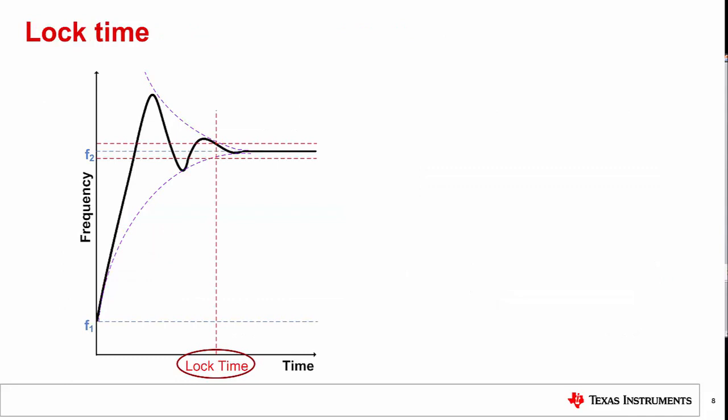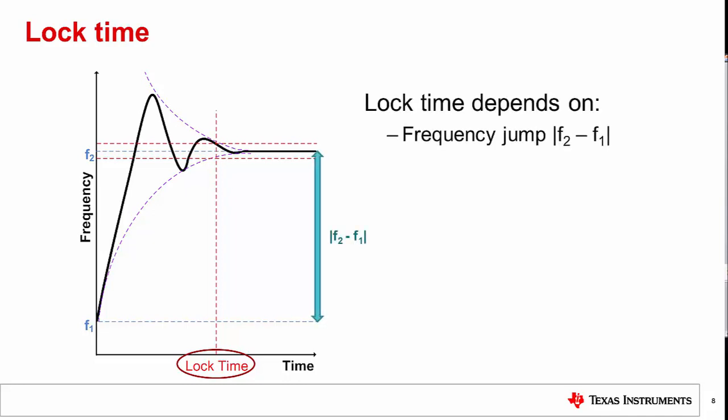Lock time is the time it takes for the PLL to change from one frequency to another and stay within a predefined tolerance. The tolerance depends upon a few things: the magnitude of the frequency jump between the initial and final frequency, and the tolerance within which the PLL is considered to be locked. Lock time increases as a slow logarithmic ratio of frequency jump to tolerance. The higher the tolerance, the faster the PLL will be considered to be locked. Similarly, the larger the change in frequency, the longer it will take for the output to be considered to be locked.